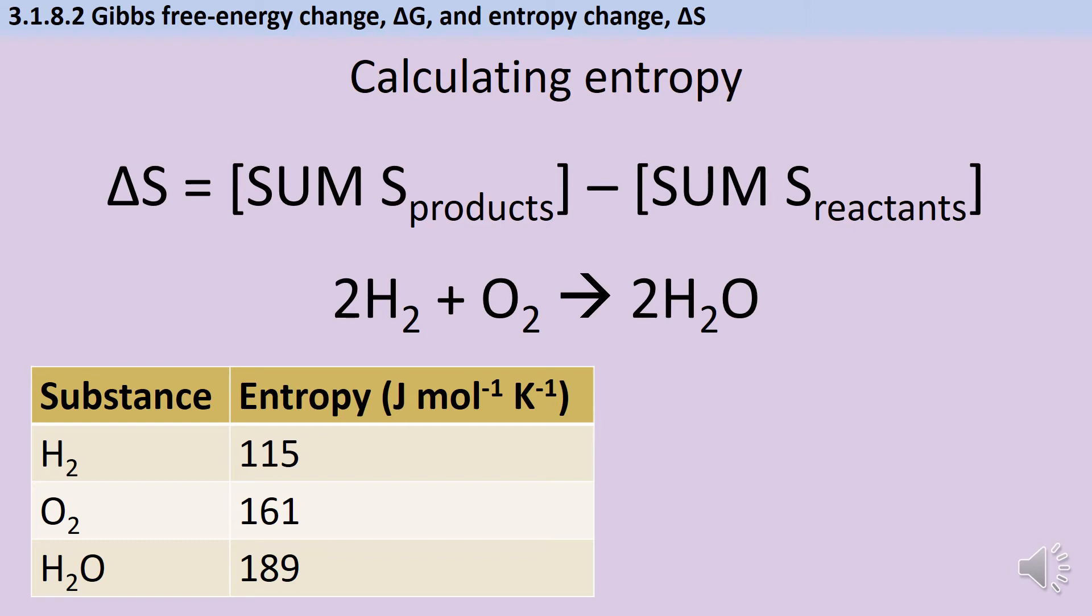Here we've got hydrogen reacting with oxygen to make water. So first I need the sum total of entropy for my products. Water has an entropy of 189 but of course there are two moles so I need it twice. That gives me a sum total of 378. For hydrogen I've got 115, but again there are two moles so I need that twice, plus 161 for oxygen, giving me a sum total of 391.